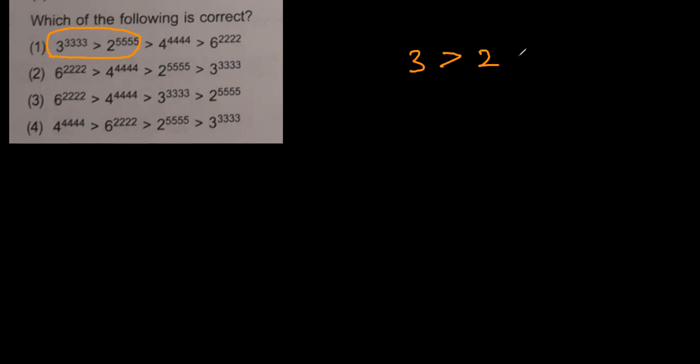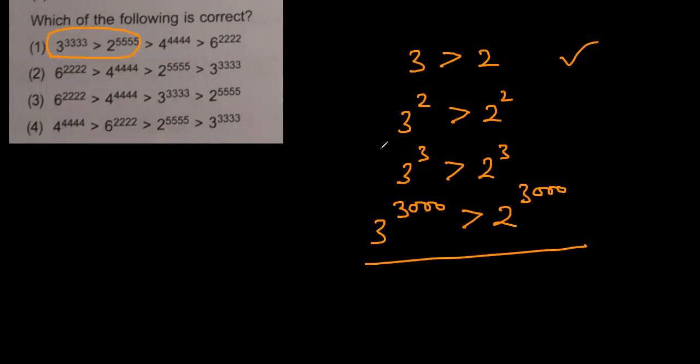What I'm saying is if you write three squared, that should be greater than two squared, and you can check it—it is correct. Not only square, three to power three is also going to be bigger than two to power three. Three to power three is 27, two to power three is eight, and this trend will continue. Even if you want to write three to power three thousand, that will also be greater than two to power three thousand. More or less, we have got some idea how to answer this question.